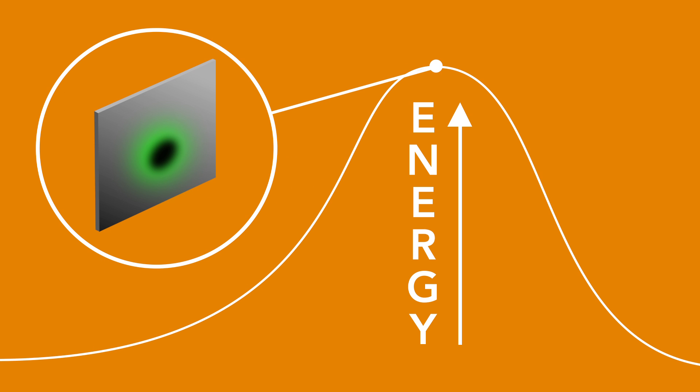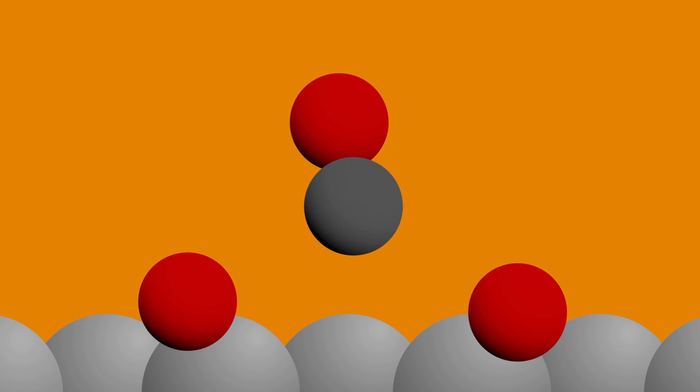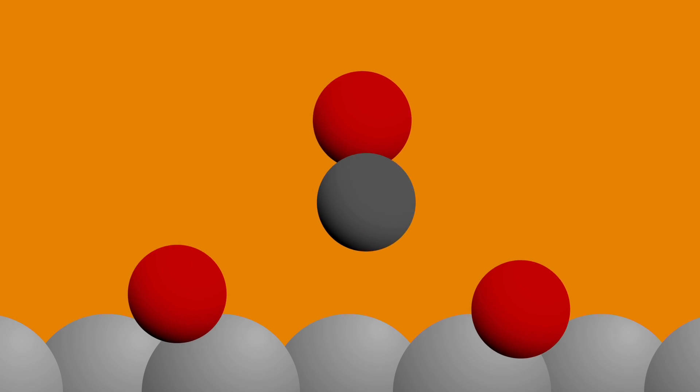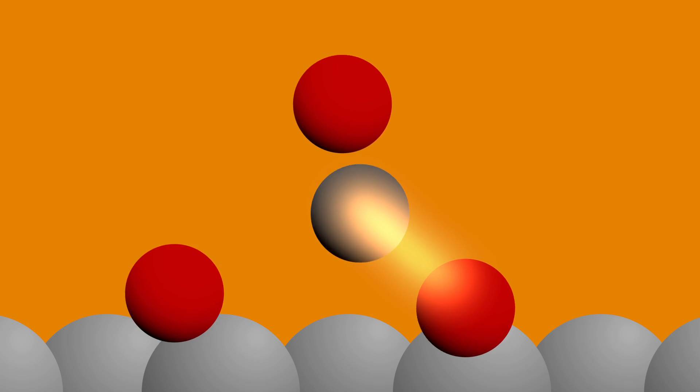The CO molecule and an oxygen atom are actually brought together on the surface, and then they are colliding to form a bond between them, which then generates CO2 that flies off into the gas phase.